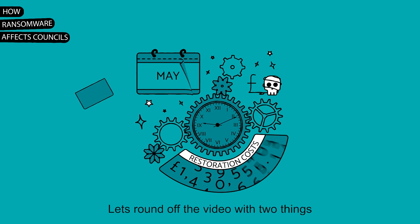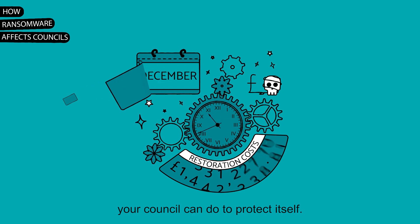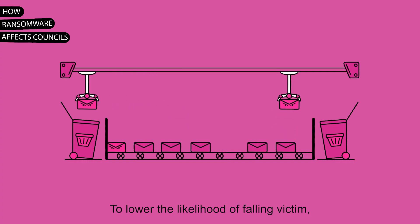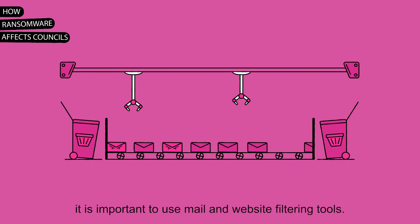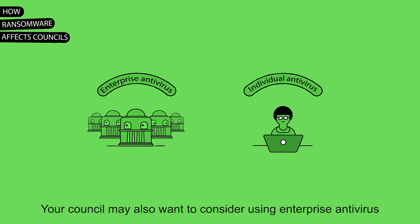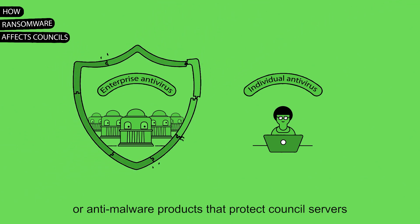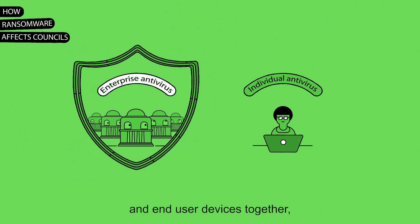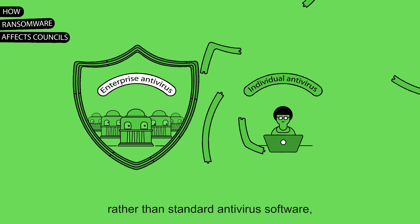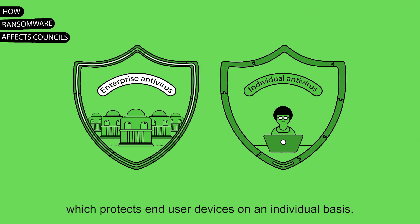There are two things your council can do to protect itself. To lower the likelihood of falling victim, it is important to use mail and website filtering tools. Your council may also want to consider using enterprise antivirus or anti-malware products that protect council servers and end user devices together, rather than standard antivirus software which protects end user devices on an individual basis.